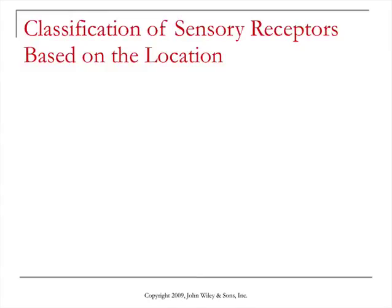There are different kinds of sensory receptors, and we're going to classify them in this slide based on their location. Exteroceptors are located at or near the external surface of the body, and their purpose is to be sensitive to stimuli from the external environment. So things like hearing, vision, smell, and tasting — those kinds of sensory receptors are called exteroceptors.